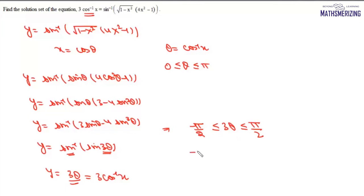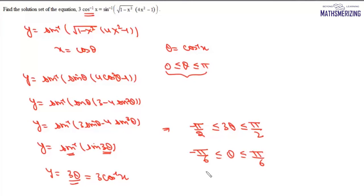From the condition 3θ ∈ [-π/2, π/2], we get θ ∈ [-π/6, π/6]. However, since θ = cos⁻¹(x) with principal range [0, π], θ cannot be negative. Combining both conditions, θ must satisfy 0 ≤ θ ≤ π/6.